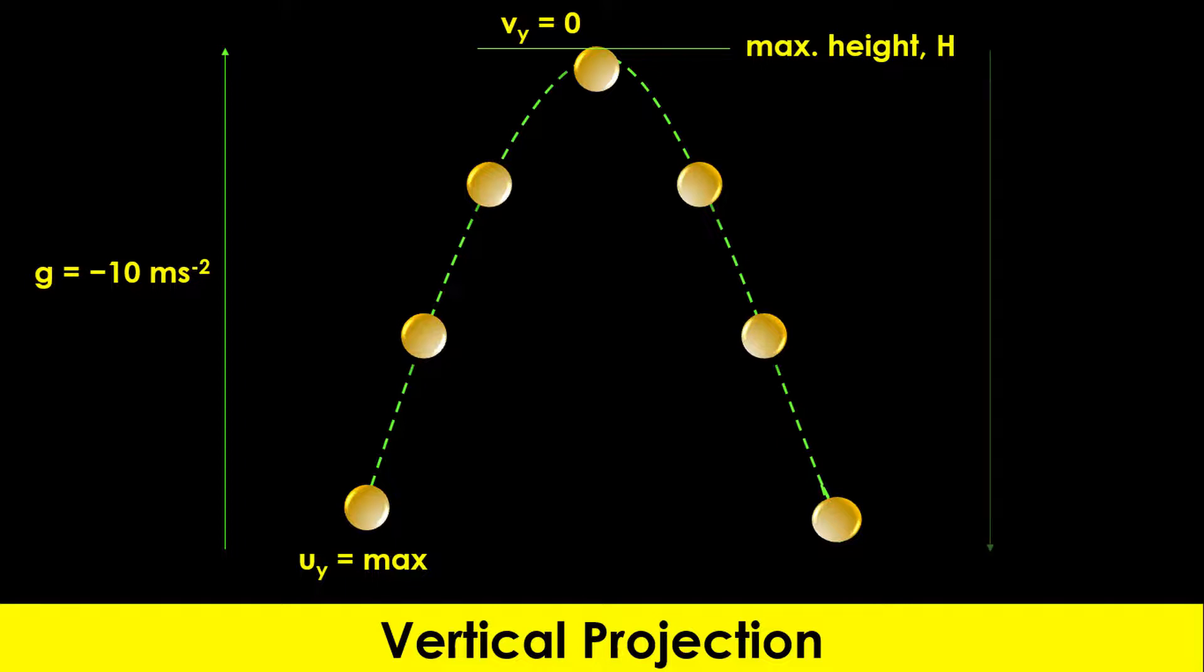its motion path is reversed as it starts coming down. Its initial velocity for the downward motion will be equal to the final velocity for the upward motion, which is zero. As the body comes down,